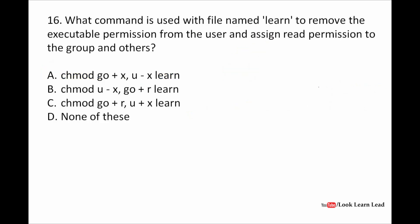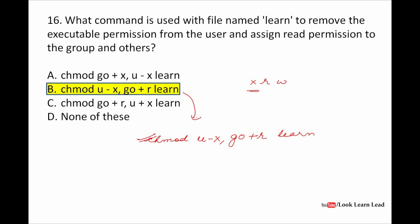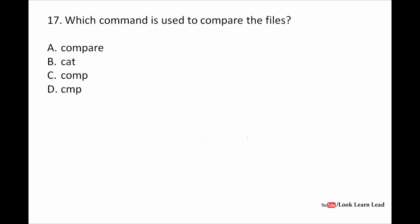Which command removes the executable permission from the user and assigns read permission to group and others for the file 'learn'? We use chmod. To remove executable permission: u-x. For read: r, for write: w, for execute: x. The syntax is chmod u-x,go+r learn. The answer removes executable from the user (u-x) and adds read to group and others (+r).